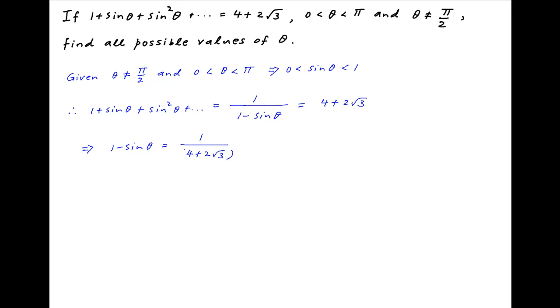Therefore 1 - sin θ is equal to 1/(4 + 2√3). Now we multiply the numerator and denominator of the right-hand side with the conjugate of 4 + 2√3, which is 4 - 2√3.